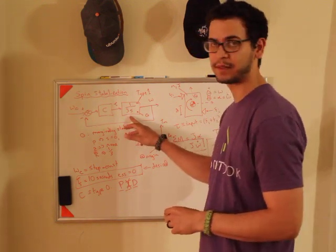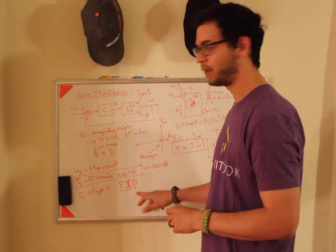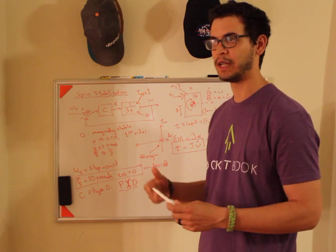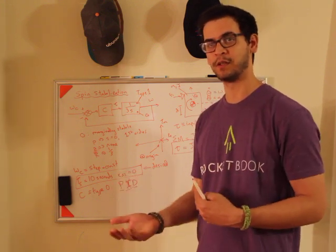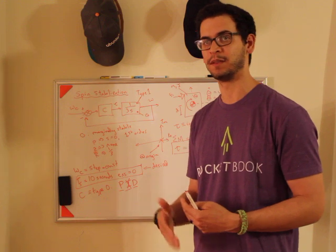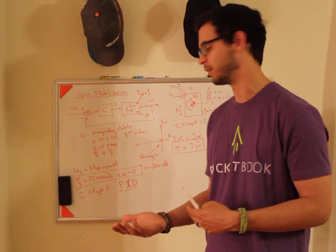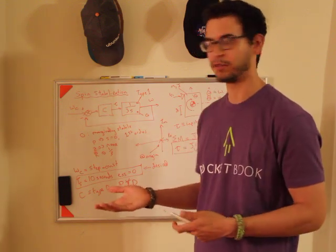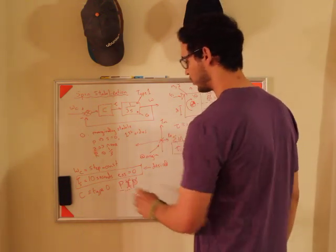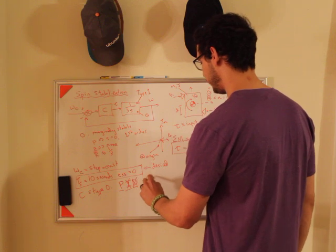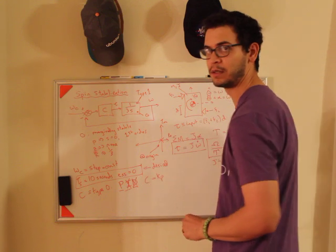I have a first order system here, and so I also don't need derivative gain. Derivative gain is used to get rid of oscillations, but I have a first order system, so the system doesn't oscillate anyway. So I don't need any oscillation control on a first order system, because the system is first order. So I really just need proportional control on this. So that means I just need C to be equal to KP.